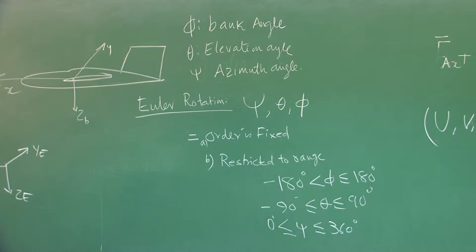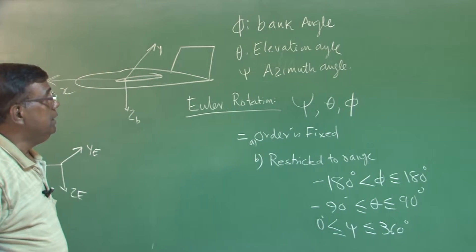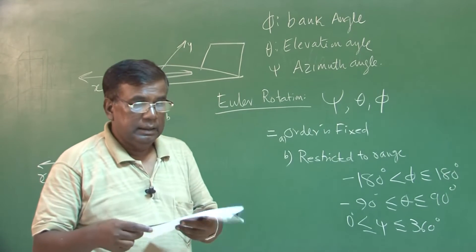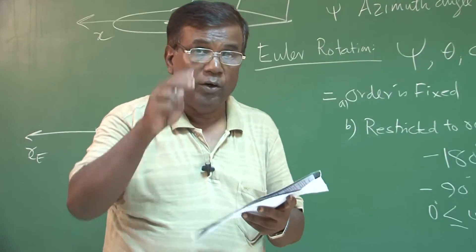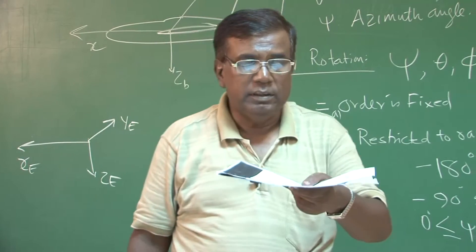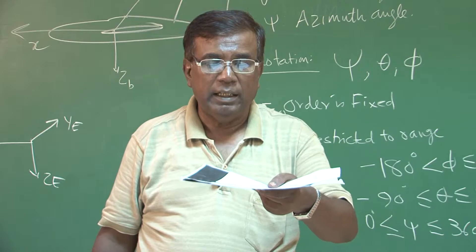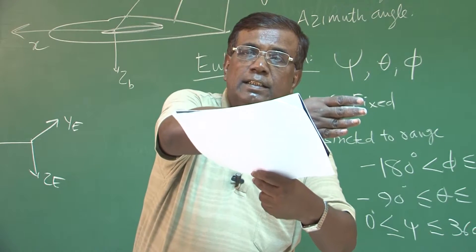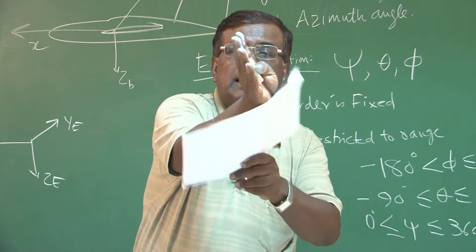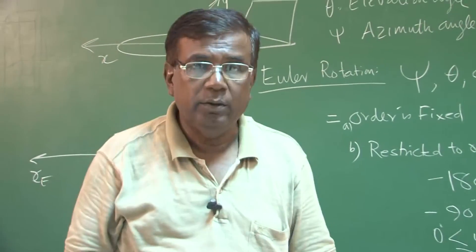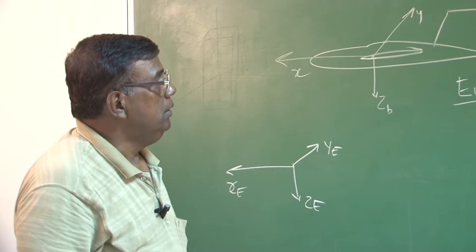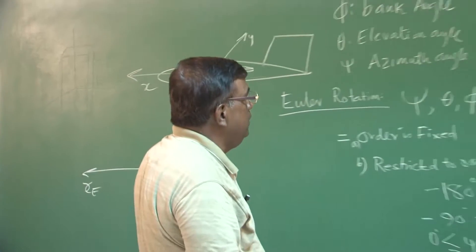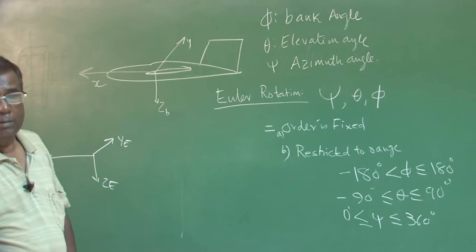Please understand one thing: loosely we often say phi as bank angle, theta as pitch angle, and psi as yaw angle — which is not strictly correct. Theta is not about the body axis; theta is about the intermediate axis after the psi rotation. So if the initial orientation is given and I apply psi, then the Y axis changes, and theta is about that new Y axis. They are different compared to the concept of roll, pitch, and yaw angle. I strictly recommend reading a few pages from the flight dynamics book by Warren Phillips, which explains this wonderfully.